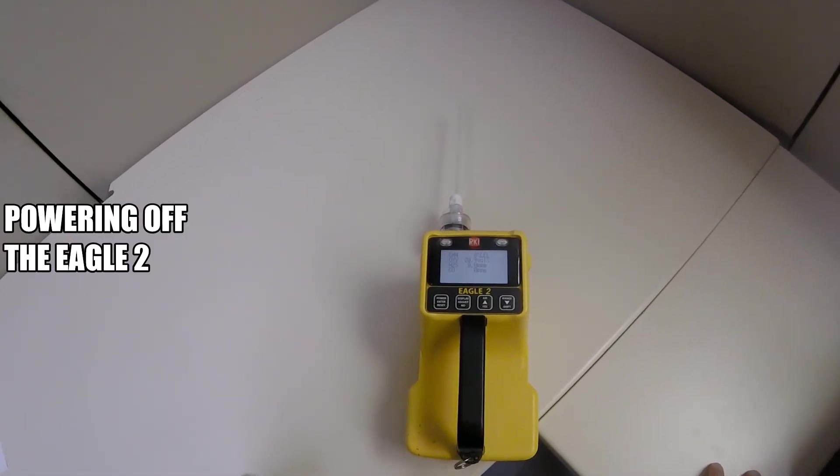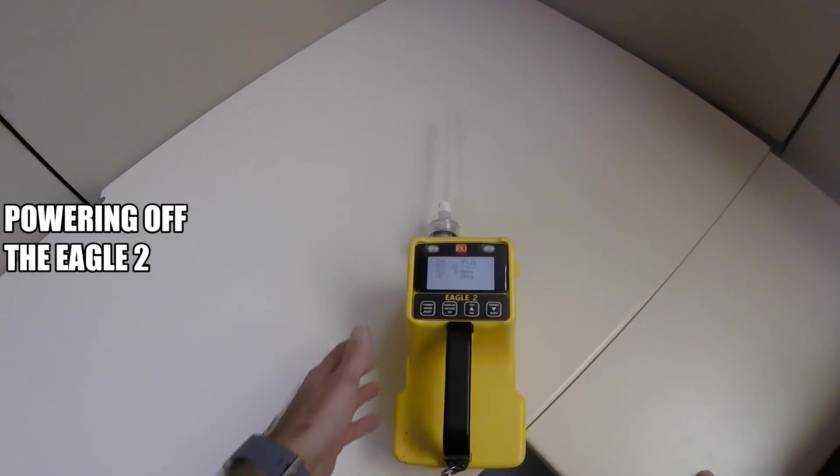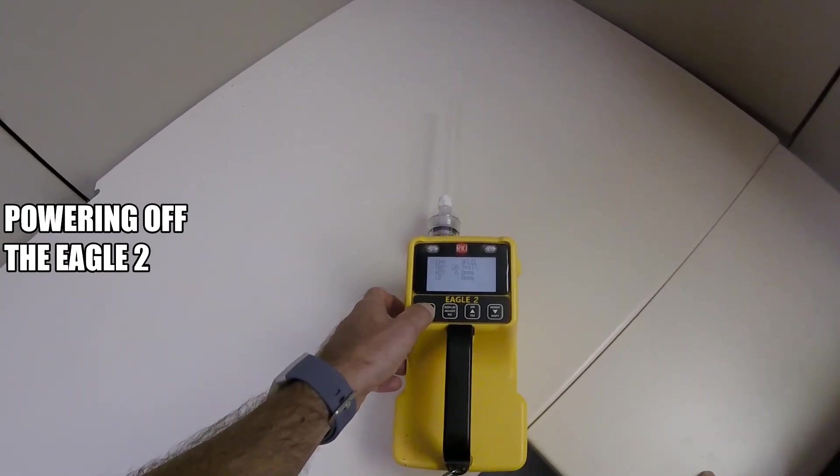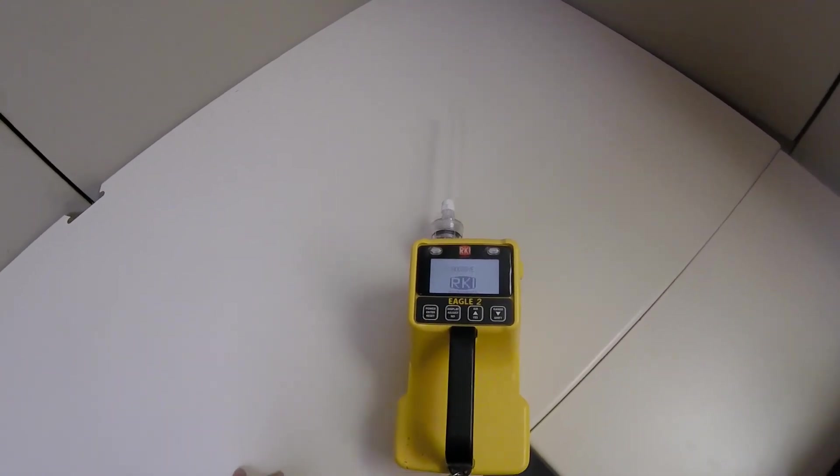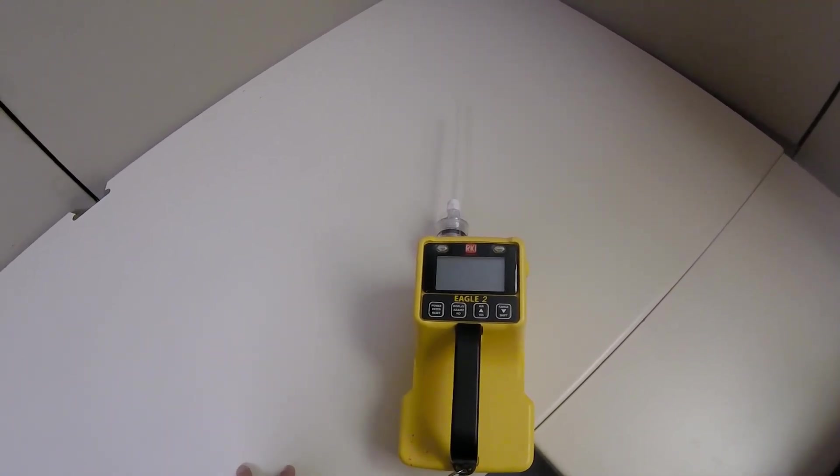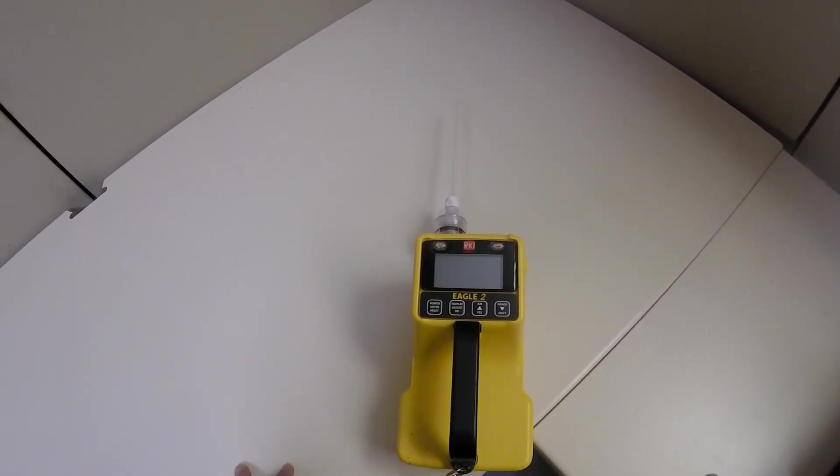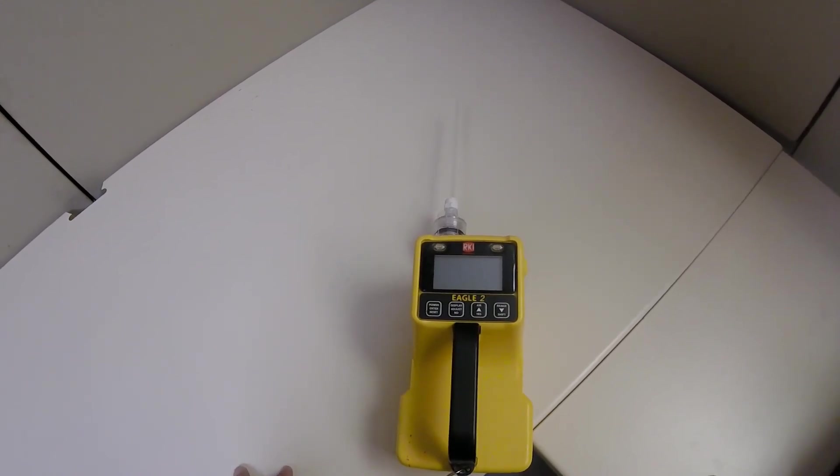Turning off the Eagle 2: Press and hold the power enter reset button. The buzzer will pulse for about five seconds. Release the power enter reset button when you see goodbye and the RKI logo. When these disappear, the Eagle 2 is off.